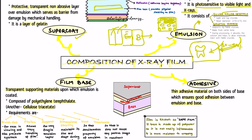The next layer is known as the film base. The film base is a transparent supporting material upon which the emulsion is coated. It is composed of polyethylene terephthalate, or alternatively cellulose triacetate. Cellulose triacetate was introduced by George Eastman in 1924 as an alternative to polyethylene. The film base is usually 0.2 mm thick, which is approximately 0.007 inches.